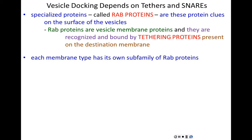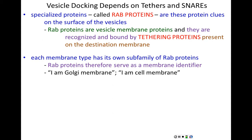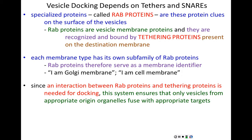Each membrane type has its own subfamily of RABs identifying vesicles from that membrane type by their point of origin. RAB proteins serve as a membrane identifier — telling the destination membrane, 'I am a vesicle made of Golgi membrane' or 'I have come from the cell's surface.' The first step of docking is an interaction between RAB proteins and tethering proteins, ensuring only vesicles from appropriate origin organelles fuse with appropriate targets.